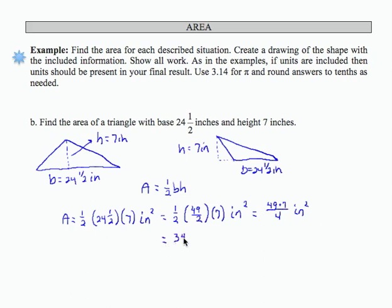If I perform that division and then round to the nearest tenth, I get 85.8 square inches. So the final result for my triangle area here is 85.8 square inches or inches squared.